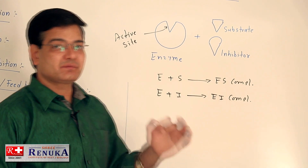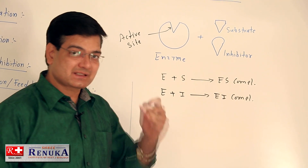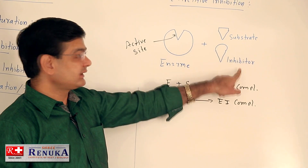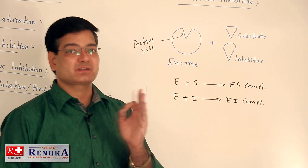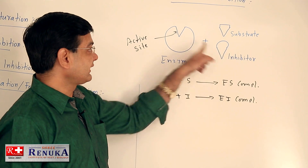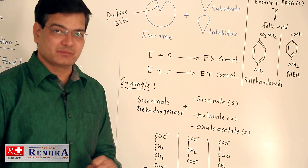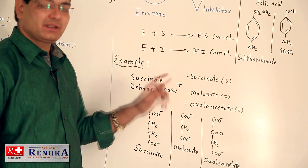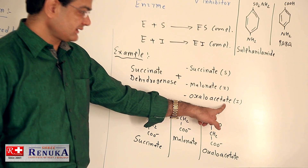The inhibitor has a similar structure complementary to the active site of the enzyme, so it must compete with the substrate. Remember that whichever is present in higher concentration — whether substrate or inhibitor — will bind with the active site. For example, succinate dehydrogenase is the enzyme, and succinate needs to bind with it, but malonate and oxaloacetate act as inhibitors competing with succinate.